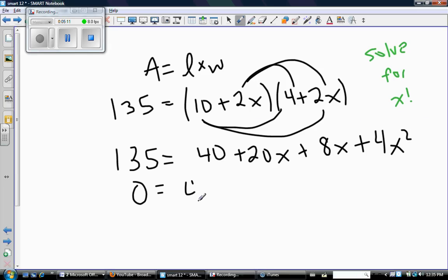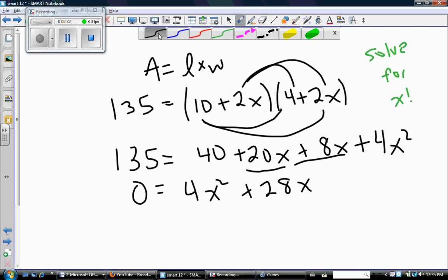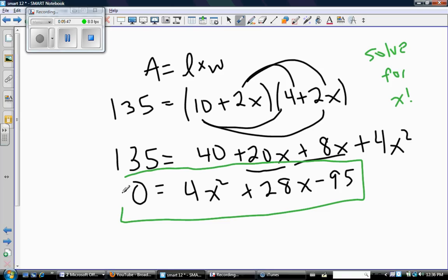So let's bring 135 over and rearrange. So I'm going to have 4x squared. Here, that's going to be plus 28x. 40, subtract 135, is going to be minus 95. So hold on, I wrote that wrong. 40 minus 135 is negative 95. So here it is. So now I have a quadratic equation that looks more like a quadratic equation that we were used to.